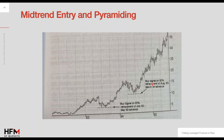Another example: the asset appreciated again, broke the previous high, posted a new high, and then declined. On this retracement we had a 50% pullback. The 50% retracement here could be used as an entry point.